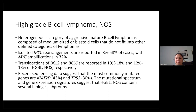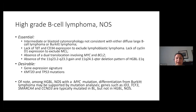There are thought to be several different gene expression signatures within high-grade B cell lymphoma NOS, and several different biological subgroups if the mutational spectrum is examined. In terms of the essential criteria, it has a similar cytomorphology to high-grade B cell lymphoma, not consistent with either DLBCL or Burkitt, with lack of TdT and CD34 expression to exclude lymphoblastic lymphoma, and lack of cyclin D1 to exclude mantle cell. There must be absence of concurrent MYC and BCL2 rearrangements, and absence of 11q abnormalities. Desirable would be a gene expression signature as well as KMT2D and TP53 mutations.